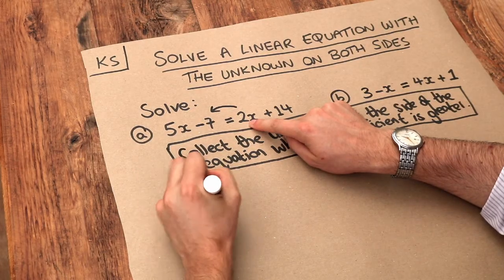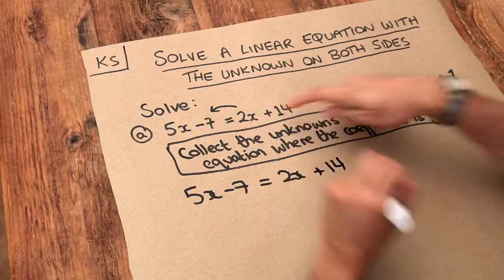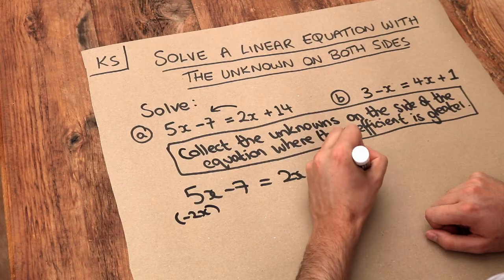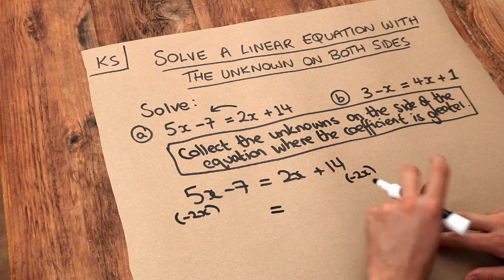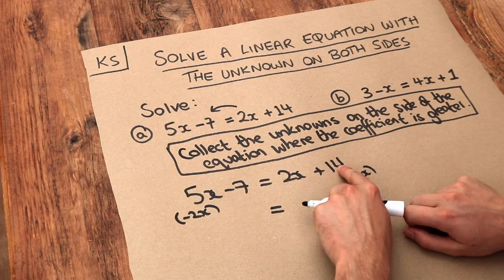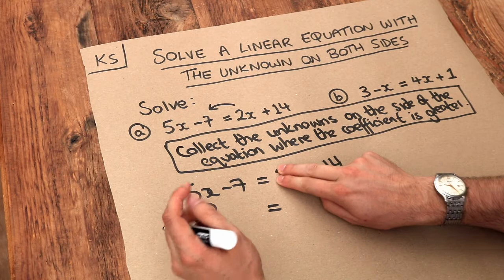Now how do we get rid of that 2X? Well all we need to do is to just subtract 2X from both sides of the equation. Because what therefore happens is when we subtract 2X from here, it just gets rid of the 2X. If we've got 14 added to 2X, if we subtract 2X, it just gets rid of the 2X.